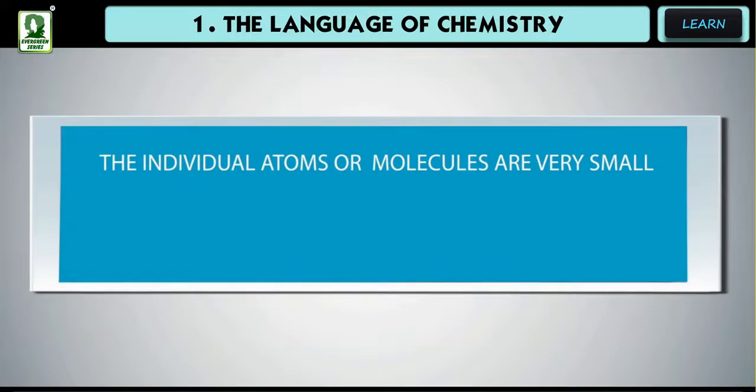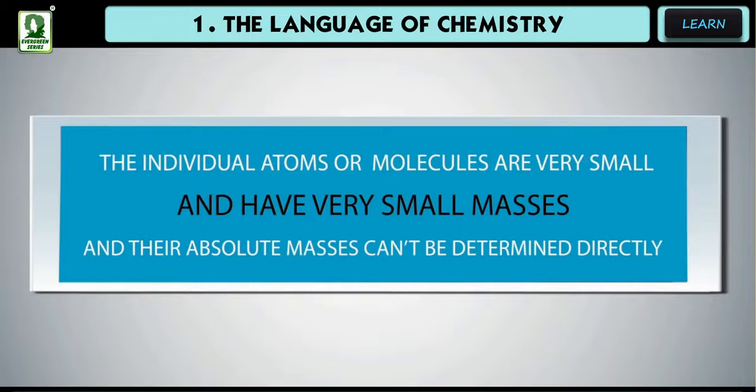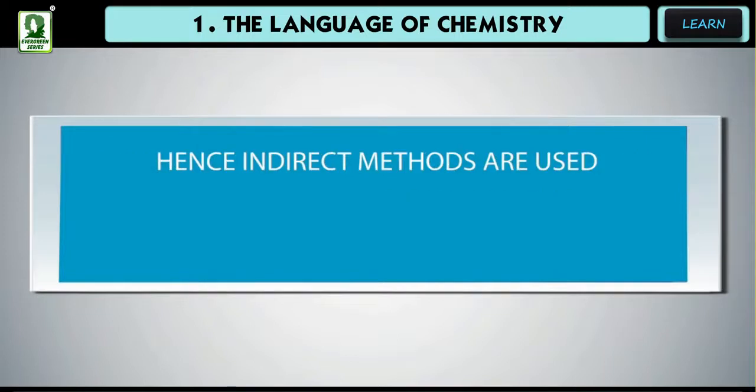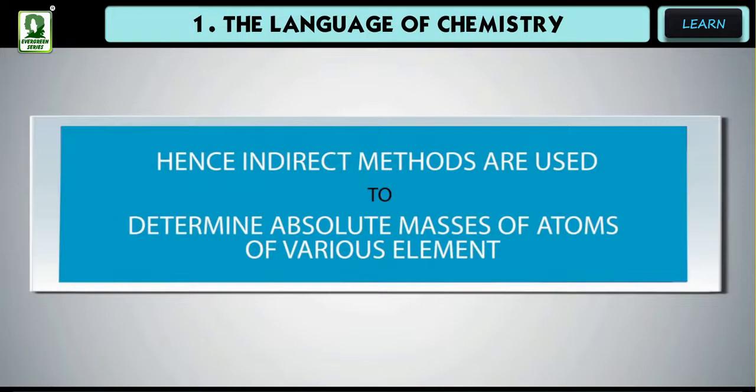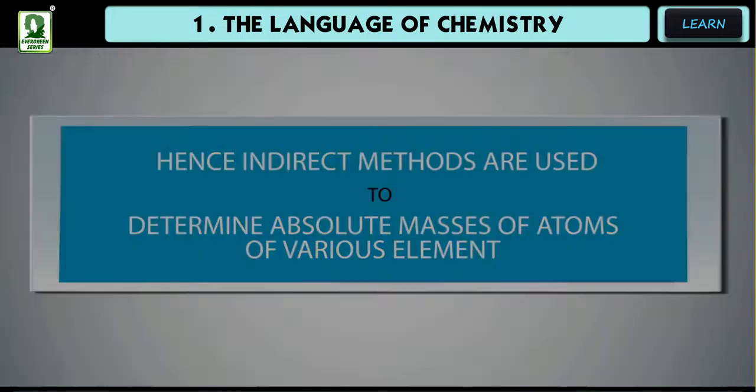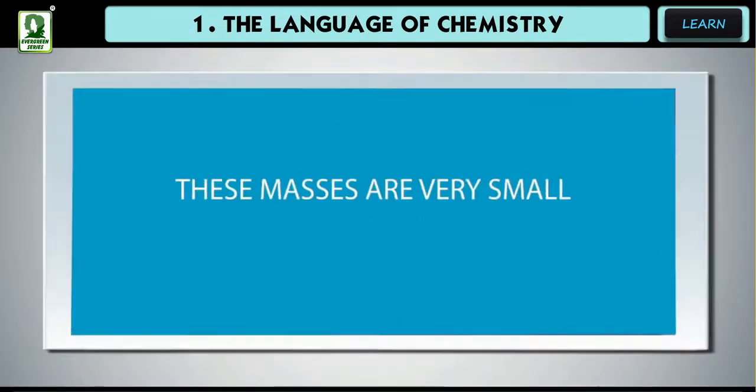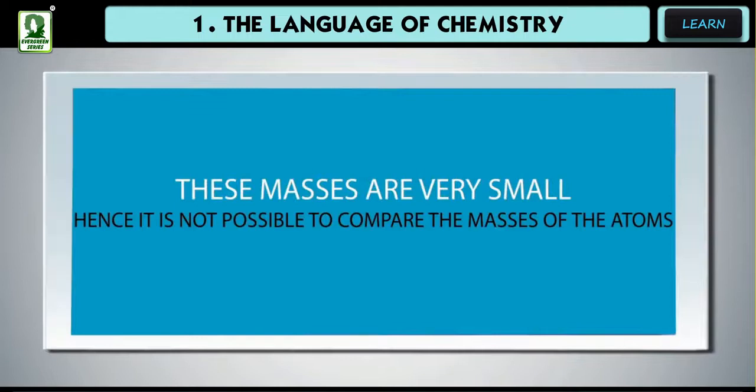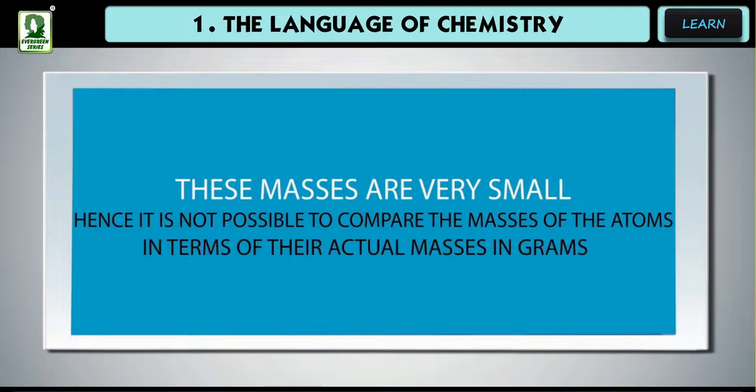The individual atoms or molecules are very small and have very small masses, and their absolute masses can't be determined directly. Hence, indirect methods are used to determine absolute masses of atoms of various elements. These masses are very small. Hence, it is not possible to compare the masses of the atoms in terms of their actual masses in grams.